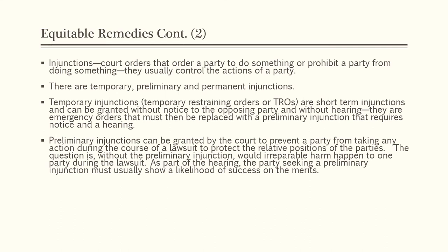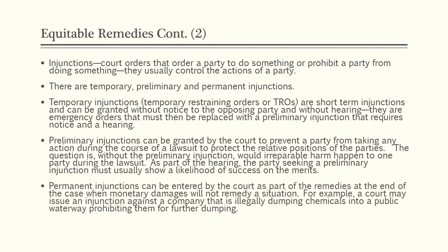Preliminary injunctions can be granted to prevent a party from taking any action during the course of a lawsuit to protect the relative positions of the parties. The question is whether, without the preliminary injunction, irreparable harm would happen to one party during the lawsuit. The party seeking a preliminary injunction must usually show a likelihood of success on the merits. Permanent injunctions can be entered as part of the remedies at the end of the case when monetary damages will not remedy a situation — for example, a court may issue an injunction against a company illegally dumping chemicals into a public waterway, prohibiting further dumping.